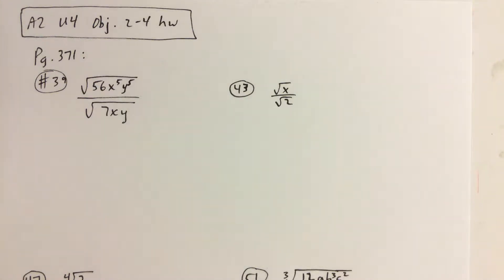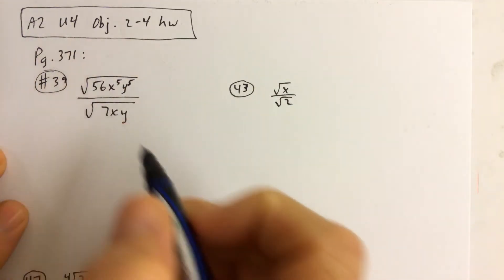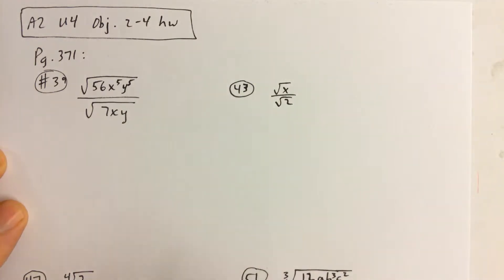I thought it might be a good idea to do videos for these four problems here at the tail end of your Algebra 2 Unit 4 Objective 2-4 homework, numbers 39 through 51, every other odd.